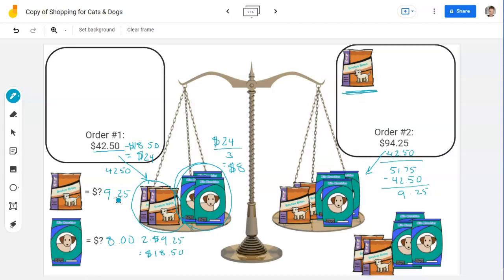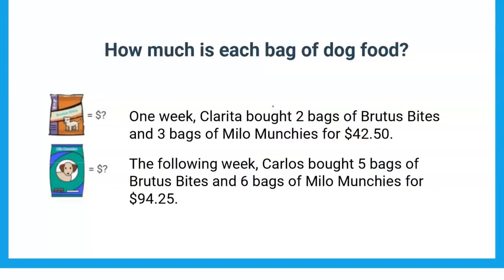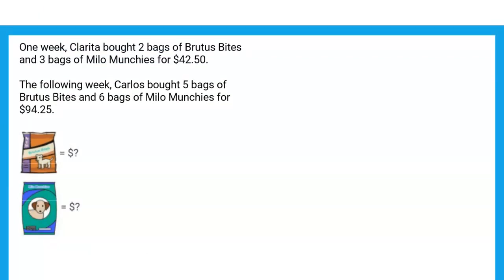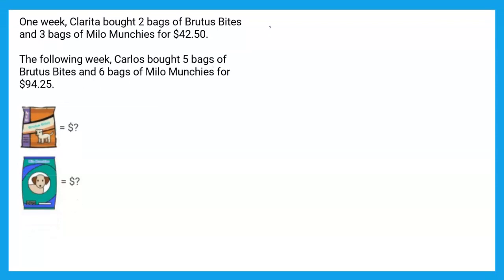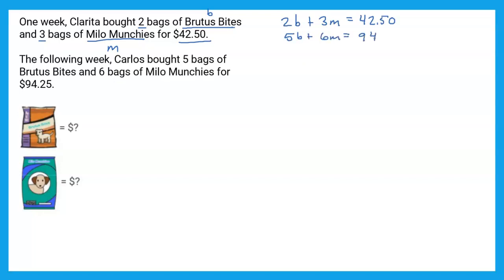So Brutus Bites were $9.25 and Milo Munchies were $8. Now let's do this as equations. Two bags of Brutus Bites — variable B — and three bags of Milo Munchies — variable M: 2B + 3M = 42.50. Five bags of Brutus Bites and six bags of Milo Munchies: 5B + 6M = 94.25. That's our system of equations.